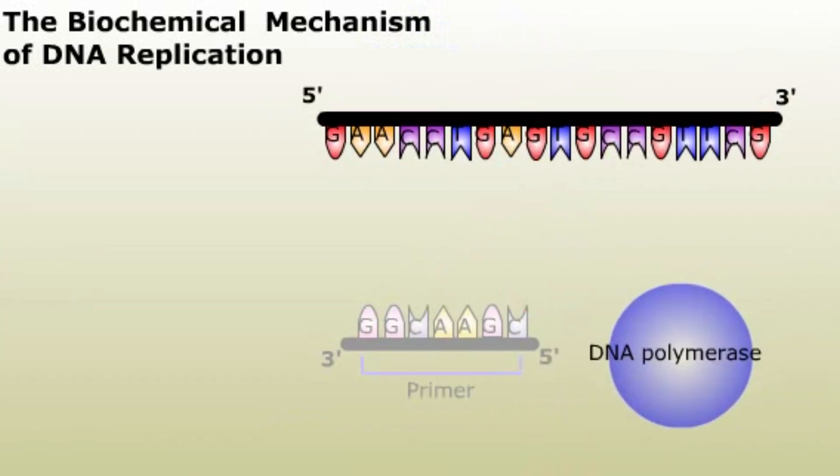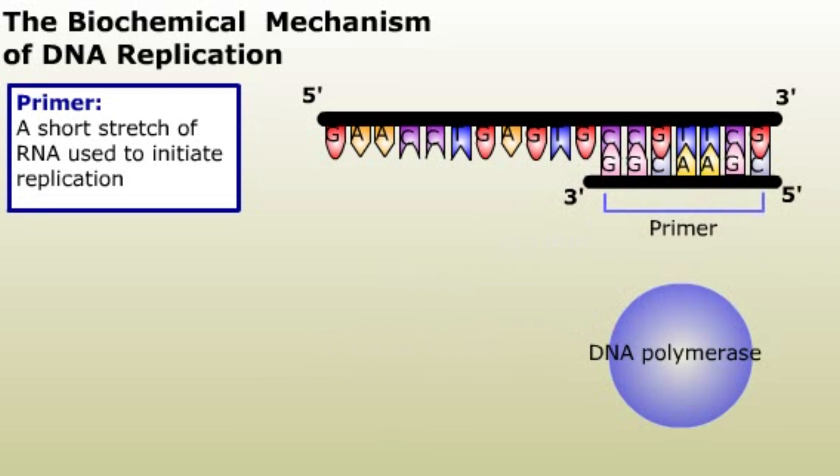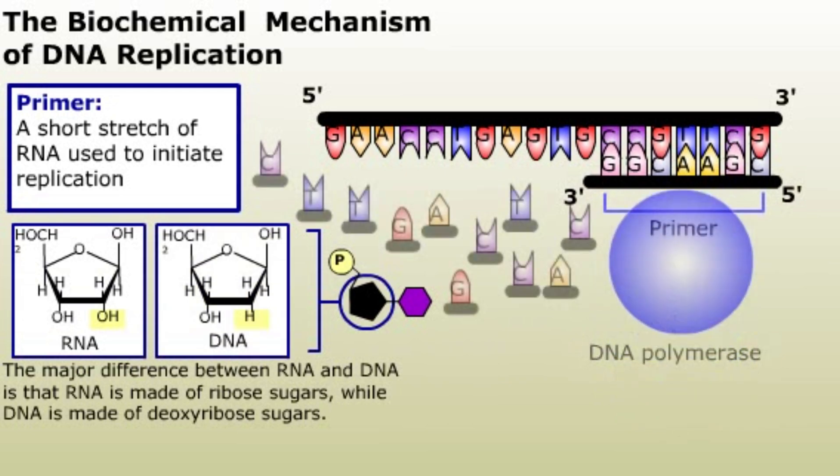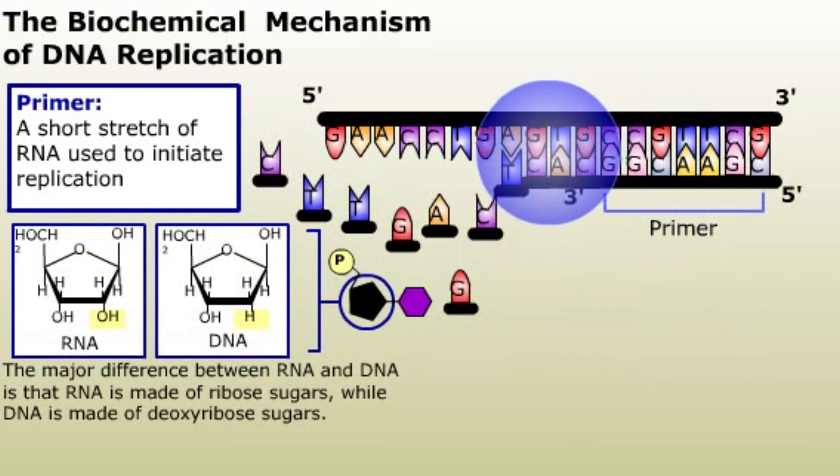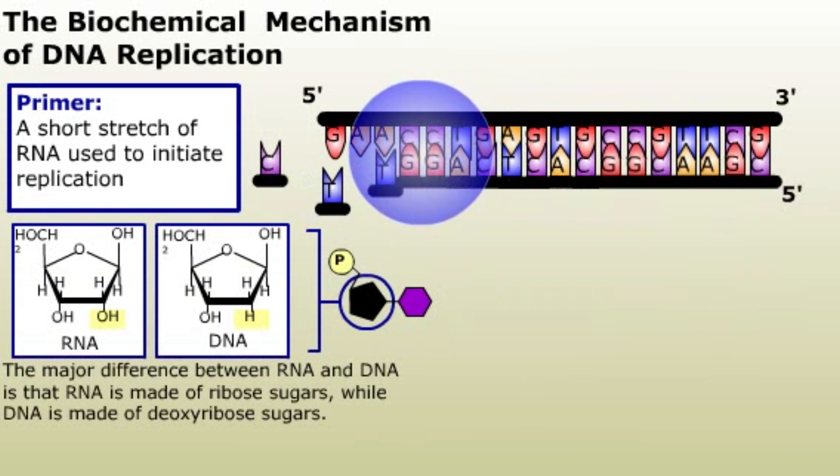DNA polymerase can only add nucleotides to an existing DNA strand. To initiate replication, a short stretch of RNA called a primer is needed. RNA is similar to DNA. The major difference is that RNA is made of ribose sugars, while DNA is made of deoxyribose sugars. DNA polymerase adds nucleotides to the RNA primer. Once replication has begun, the RNA primer is replaced by DNA versions of the nucleotides.